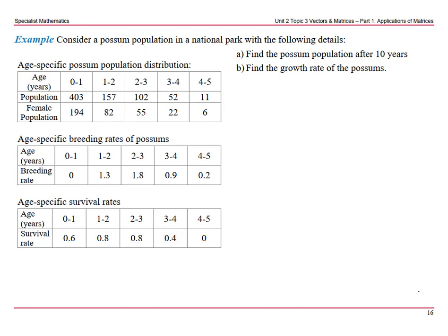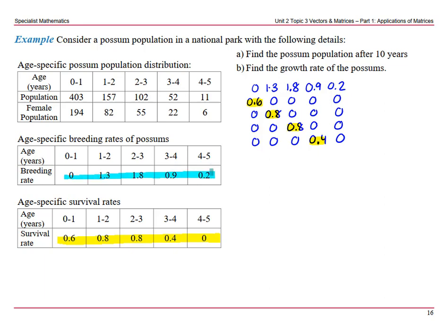Part A says find the possum population after 10 years. So let's do our Leslie matrix. We have our survival rates on the diagonals, our breeding rates across the top. So 0, 1.3, 1.8, 0.9, 0.2, 0.6, 0.8, 0.8, 0.4. Survival rates are on the diagonal and breeding rates are across the top.